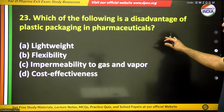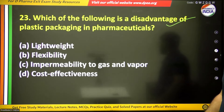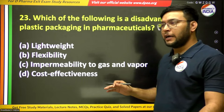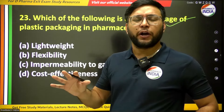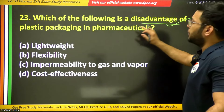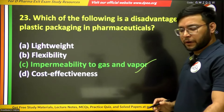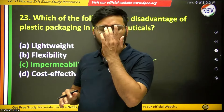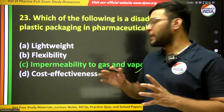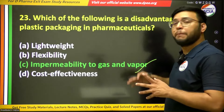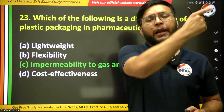The twenty-third question: which of the following is a disadvantage of plastic packaging in pharmaceuticals? The answer is impermeability to gas and vapor — if a product has gas or vapor issues, the plastic packaging makes it impermeable, allowing gas or vapor to escape and potentially cause hazardous outcomes.